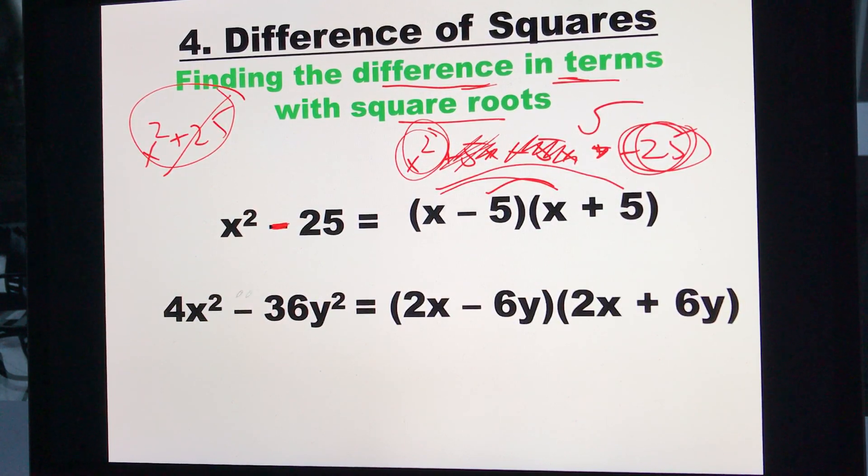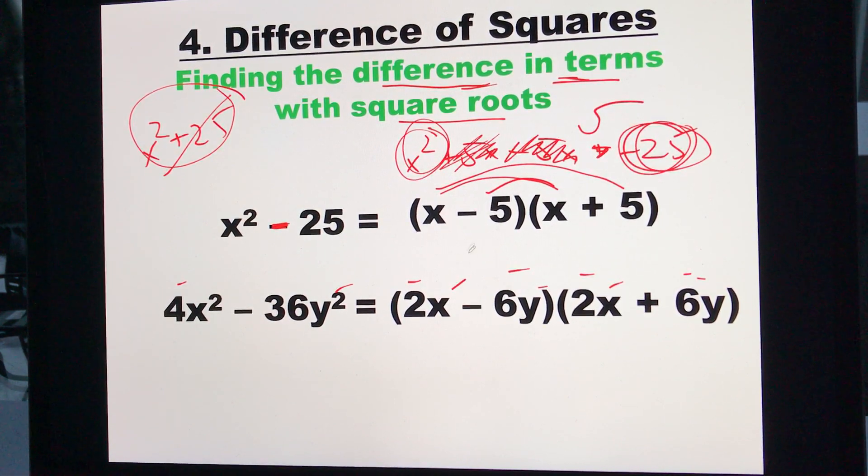So I just go right to my brackets. Square root of 4 is 2. So there are the 2's. Square root of 36 is 6 and 6. And then I just put the square root of x squared, which is the x's. Square root of the y squared, which is the y's. Make one negative, make one positive. It doesn't matter which one. You can have the positive one first if you wanted, the negative one second. It doesn't make a difference.